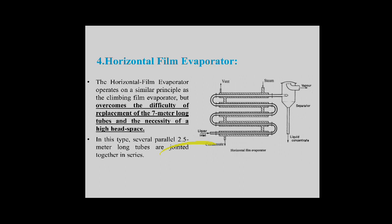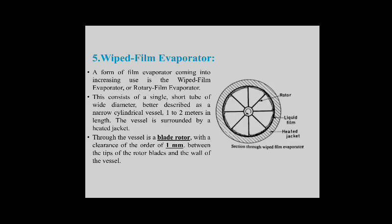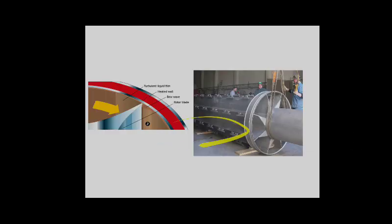The horizontal tube film evaporator operates on a similar principle as the climbing film evaporator but overcomes the difficulty of replacing seven-meter-long tubes and the necessity of high headroom. In this type, several pairs of 2.5-meter-long tubes are joined together in series. The wiped film evaporator, also called a rotary film evaporator, is a form of film evaporator increasingly in use. It is used for very viscous liquids.